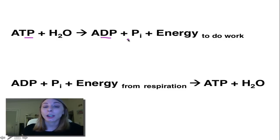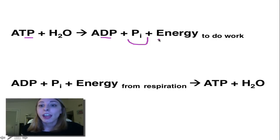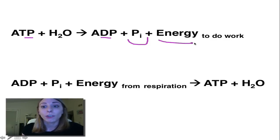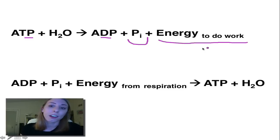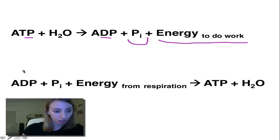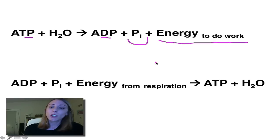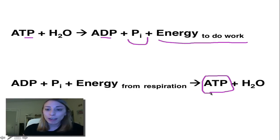We get a free phosphate — like those little yellow circles — and we get our energy to do work, like walk and think and talk and all that. And if we want to reform the ATP, we basically just reverse this.